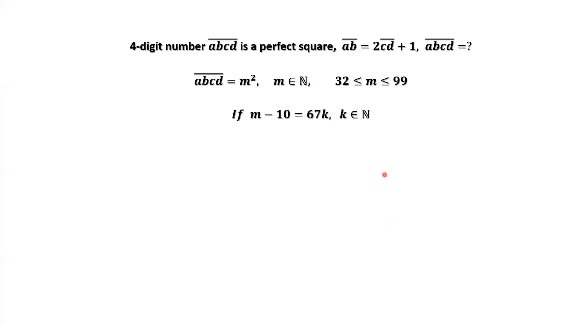We consider the second situation. M minus 10 equals 67K. This implies M minus 10 equals 67. Based on this condition, M must be between 32 and 99. K only can be 1. This implies M equals 77.